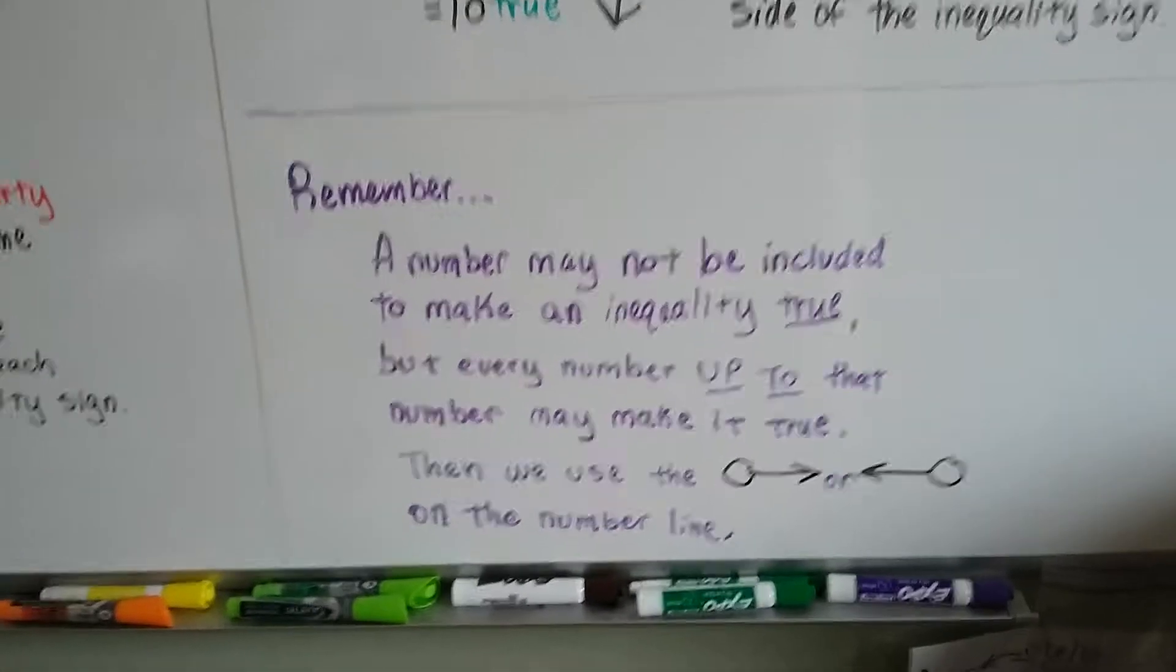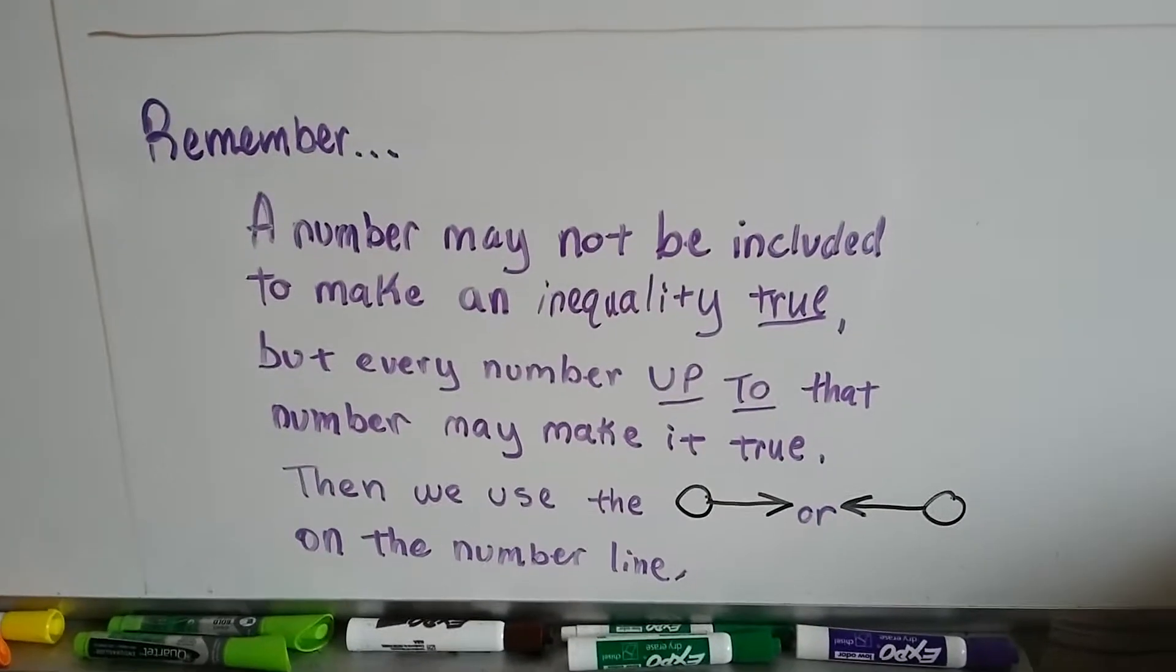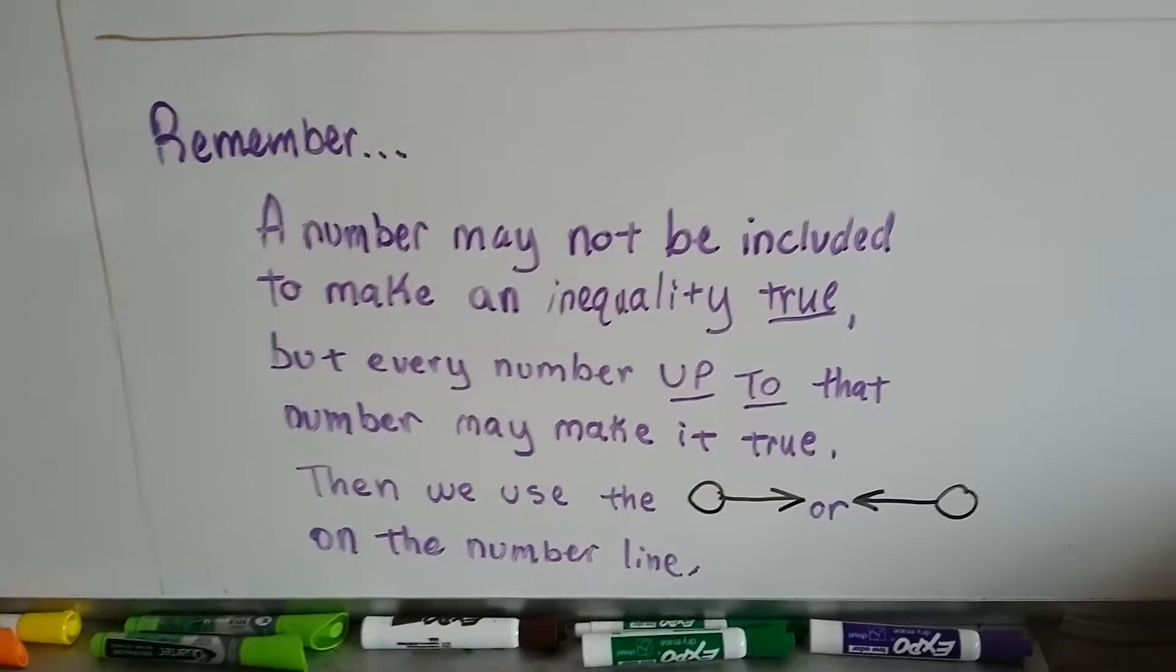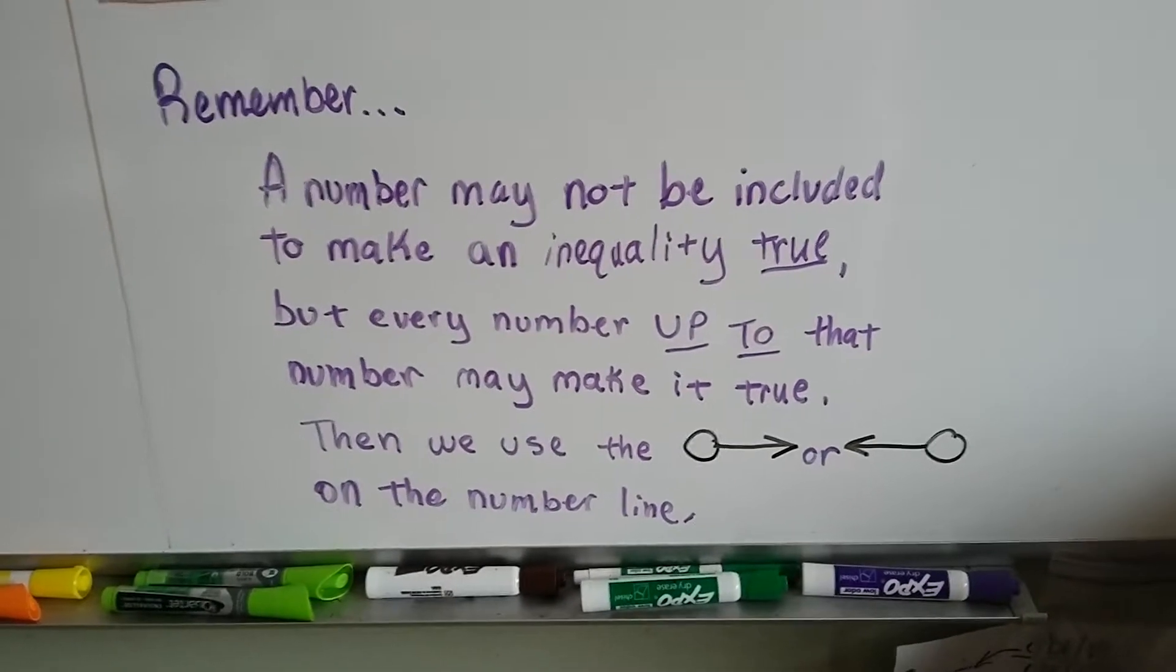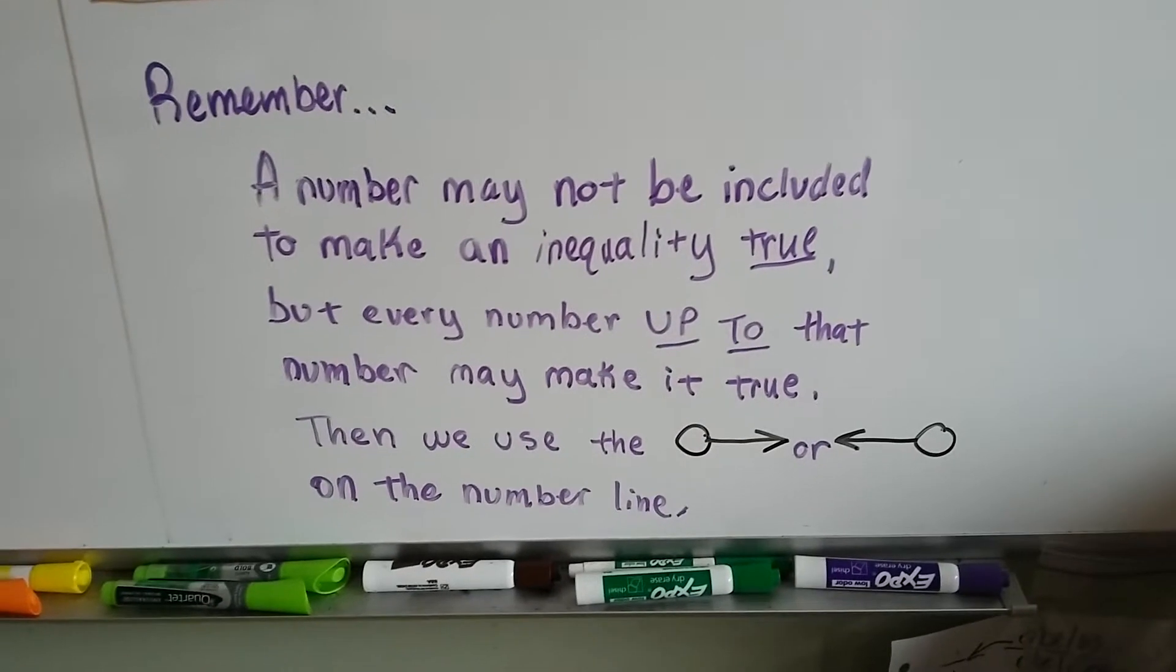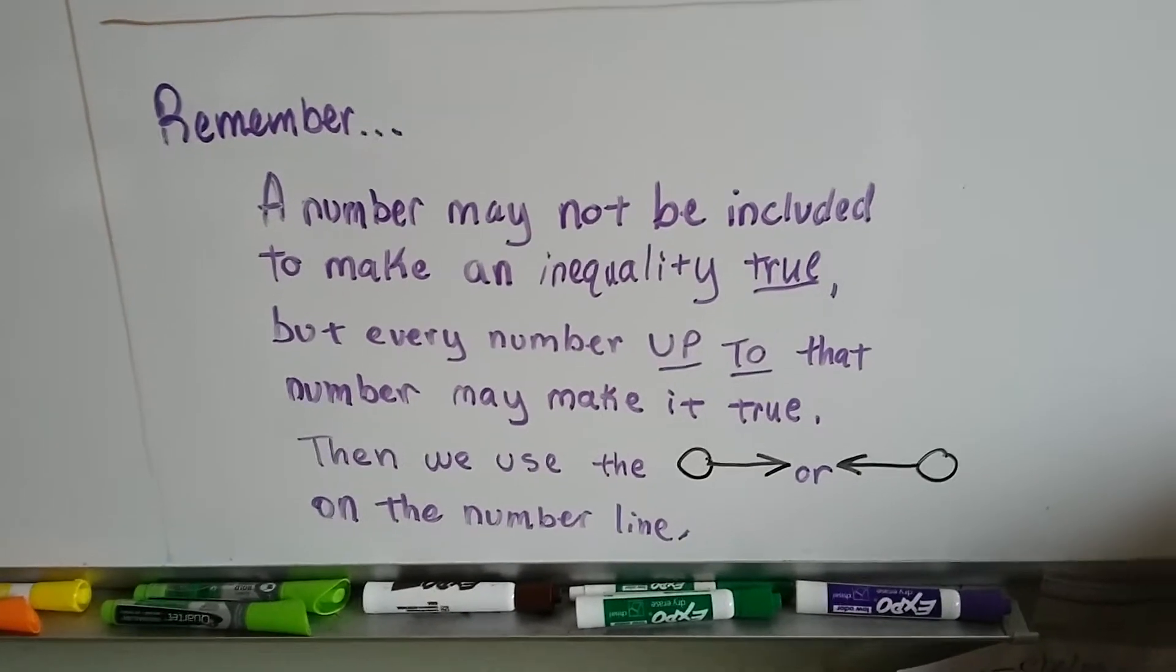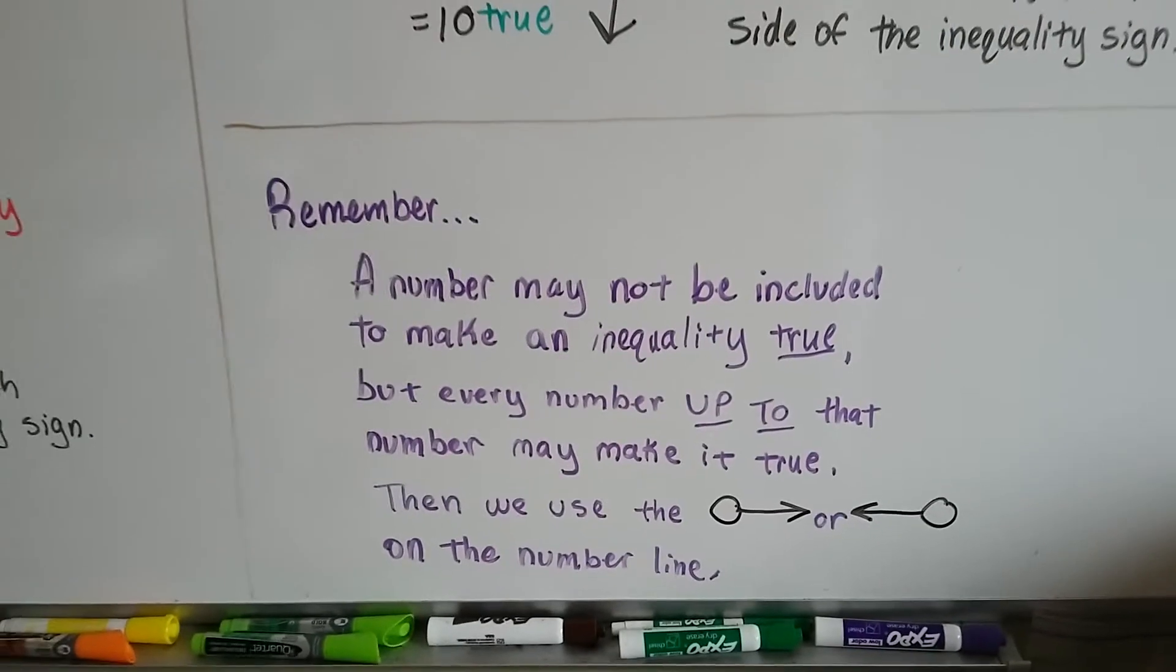So remember, a number may not be included to make an inequality true, but every number up to that number may make it true. Then we use the open circle with an arrow pointing to the right or the open circle with an arrow pointing to the left on the number line to show which ones make it true.